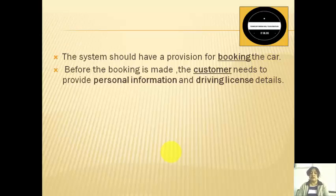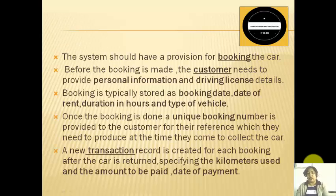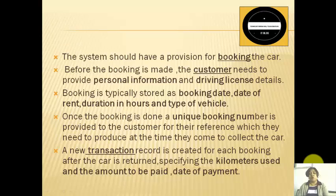Before the booking is made, the customer needs to provide personal information and driving license details. We need to store the details of the customer, which can include personal information as well as the driving license. Personal information you can assume includes name, address, phone number, email ID, and so on. We need a primary key for each entity, and here the driving license is a unique ID so it can become the primary key. Booking is typically stored as booking date, date of rent, duration in hours, and type of vehicle.